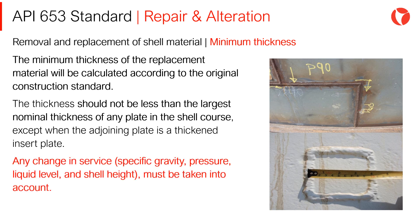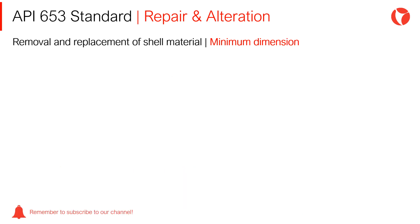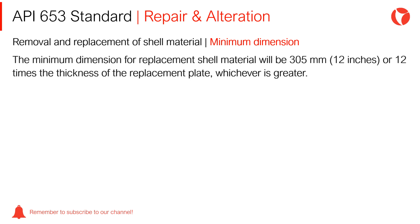Any change in service, specific gravity, pressure, liquid level, and shell height must be taken into account. The minimum dimension for replacement shell material will be 305 mm, or 12 times the thickness of the replacement plate, whichever is greater.